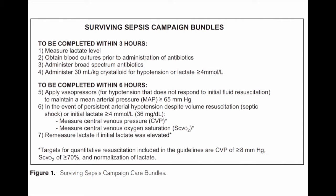These are the all-important Surviving Sepsis Campaign bundles. There is a three-hour bundle and a six-hour bundle, and I will show a slight change to the six-hour bundle given some recent data. The three-hour bundle is to measure a lactate level, obtain cultures prior to administration of antibiotics, administer broad-spectrum antibiotics, and administer a 30 milliliter per kilogram crystalloid bolus for hypotension or hyperlactatemia.